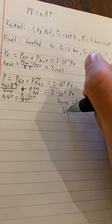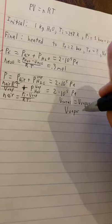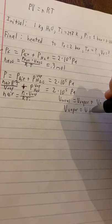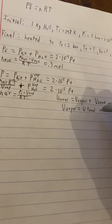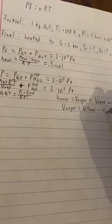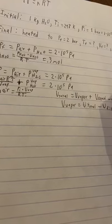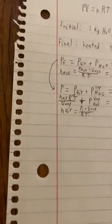So then we know that V vapor must be equal to the V total minus the volume of liquid water. And in order to get volume of liquid water, we would use the mass of water divided by the density of the water to get that.